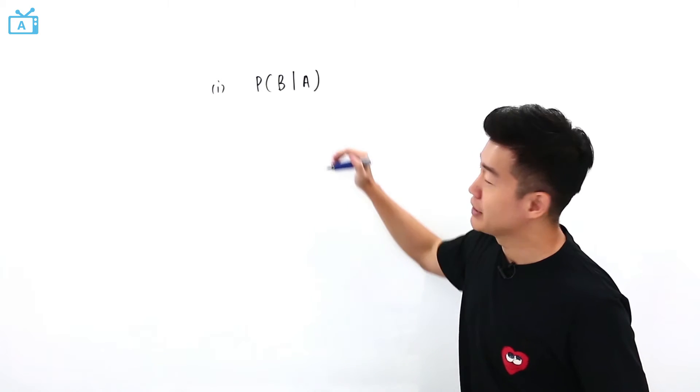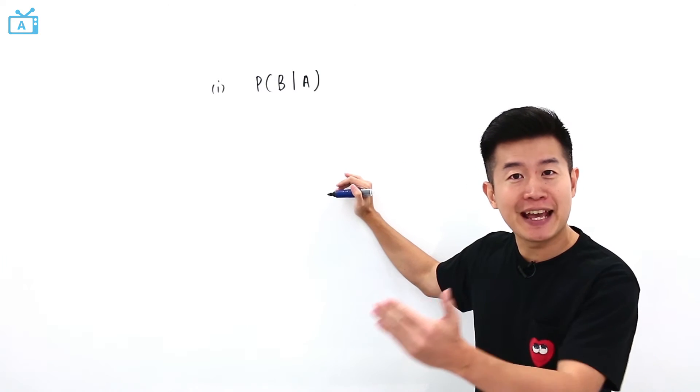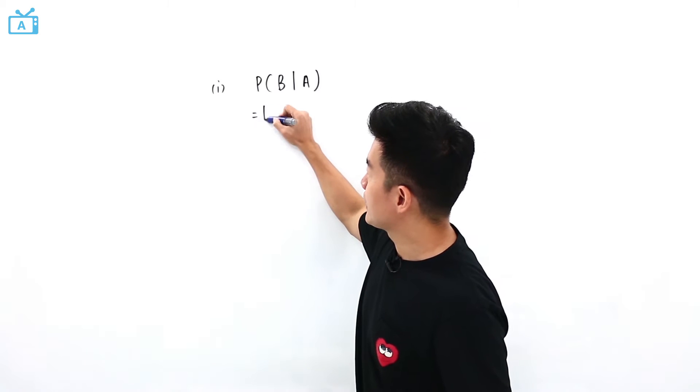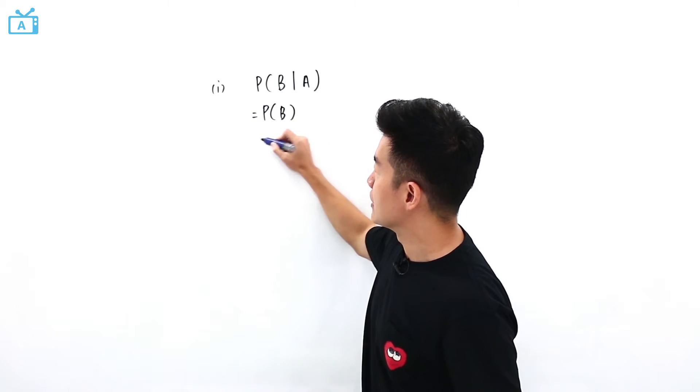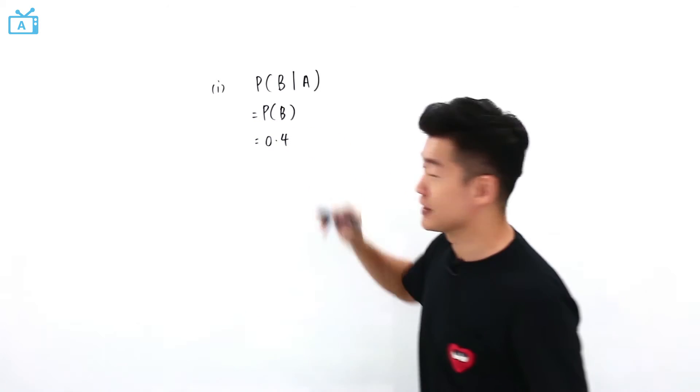According to our topic outline, the probability of B given A when B and A are independent of each other is the same as the probability of B. So my answer is just simply 0.4.